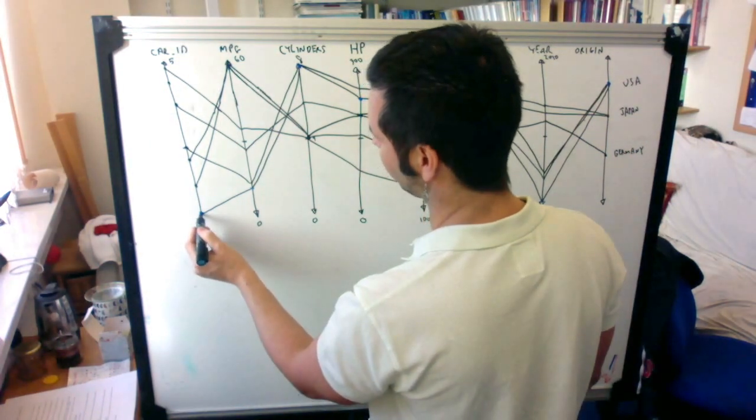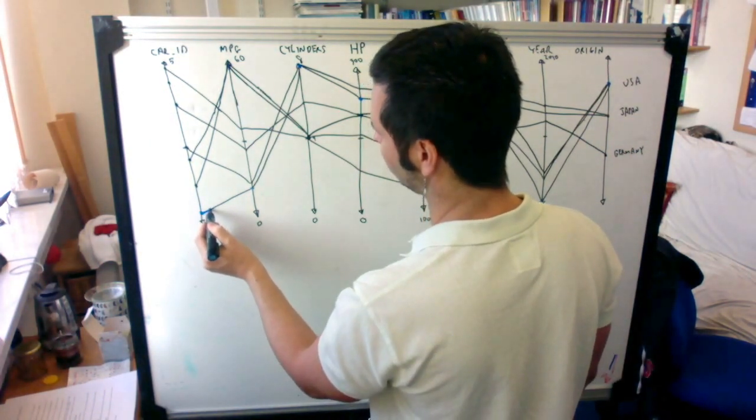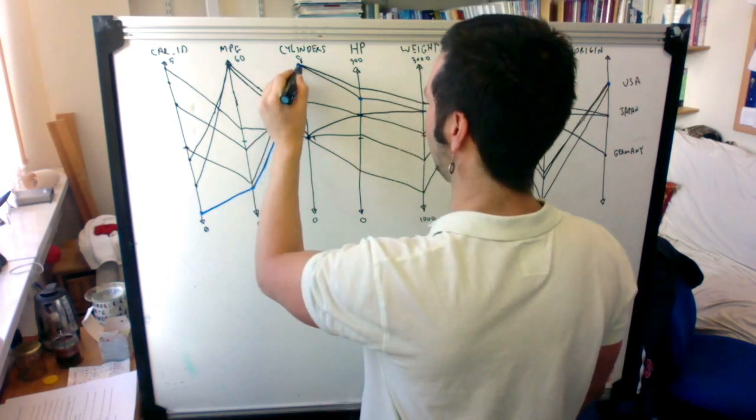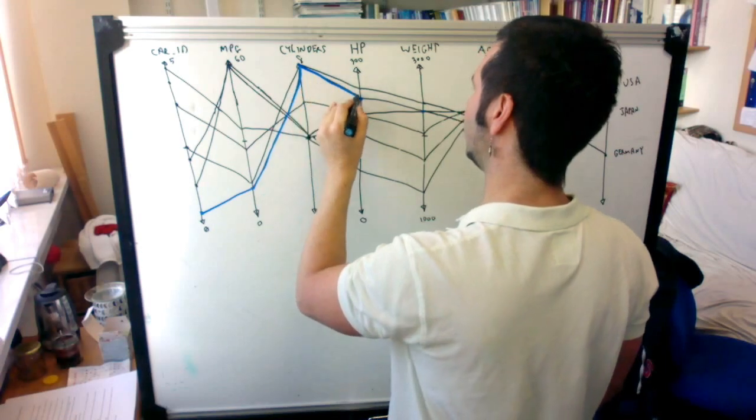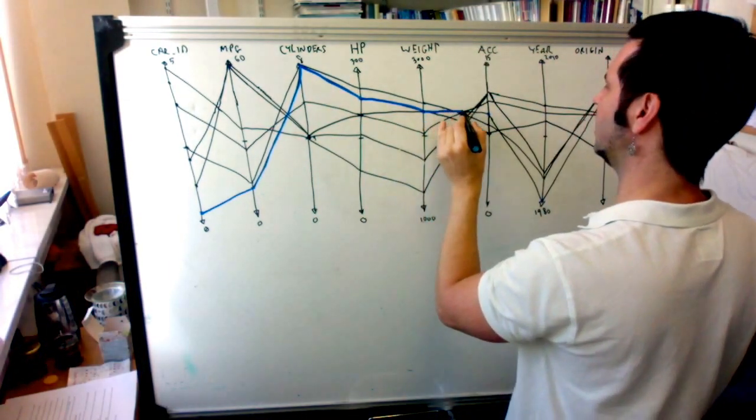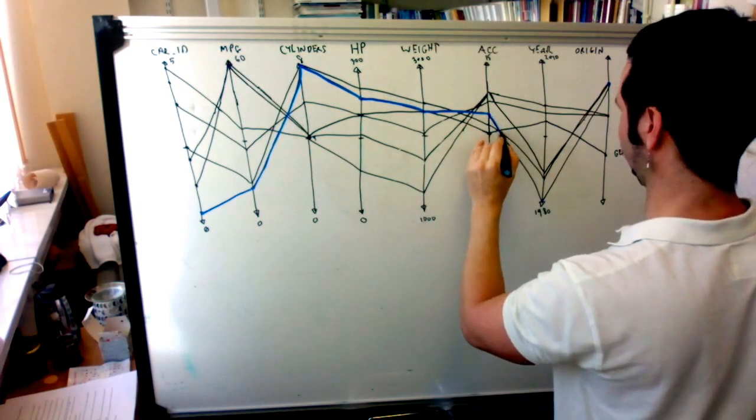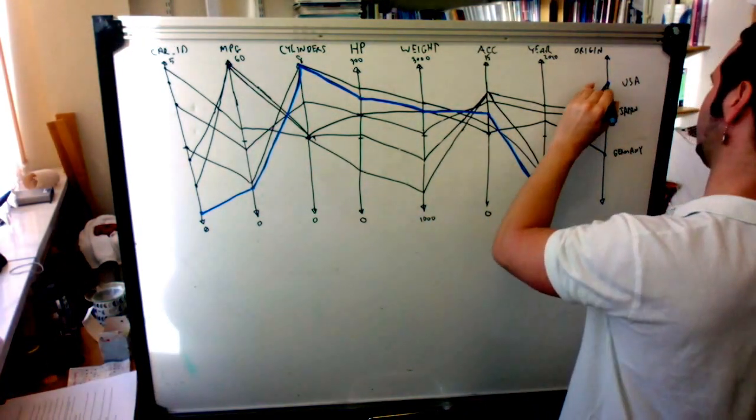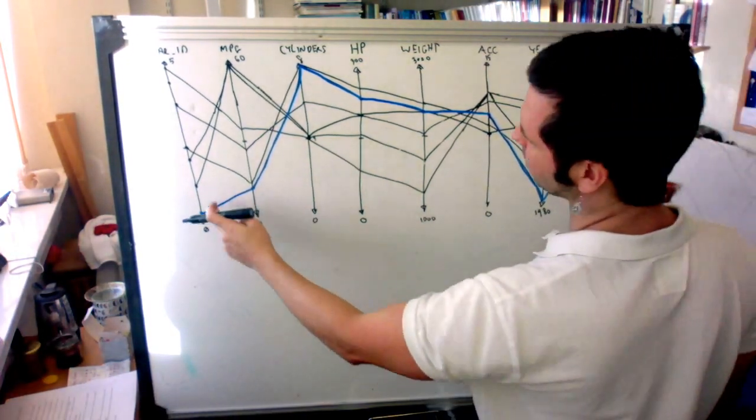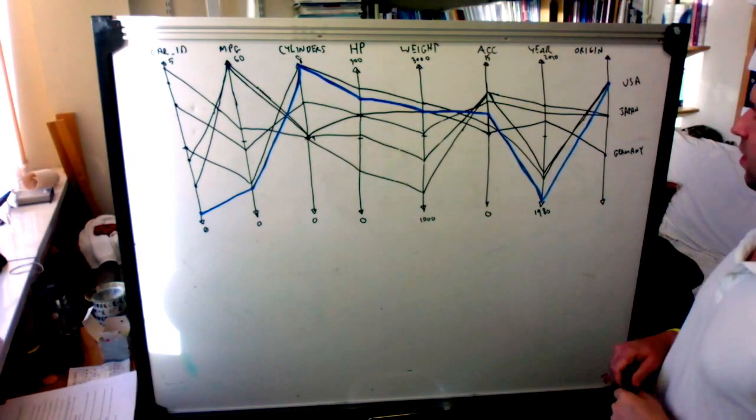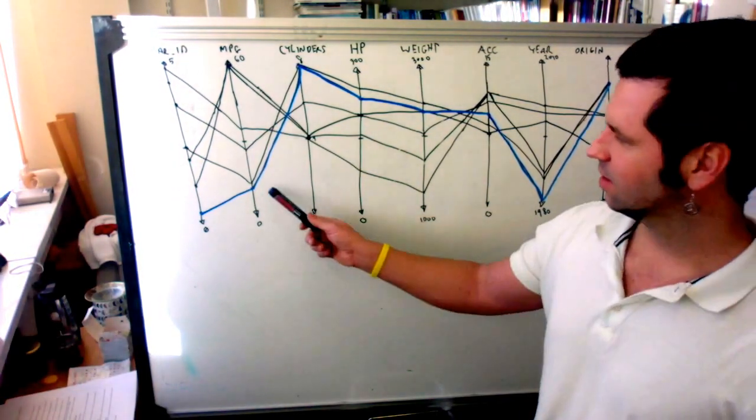So they click on that range, and then the polyline that corresponds to that is highlighted in some color. In this case, the color is blue. And we find out by clicking on this point or this range, we find out that that car comes from the U.S. And it's a gas guzzler.